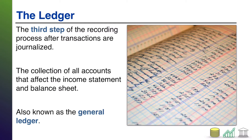Now we're going to proceed to do what's called posting the journal entries to the ledgers. There are two words you'll hear: the ledger, and the ledgers plural. The difference is that the individual accounts each have their own ledger — the cash account will have a ledger, the sales revenue account will have a ledger, and so forth. Then the collection of all of those ledgers is known as just the ledger, or the general ledger. When you take all the individual account ledgers and compile them together, you create the ledger.